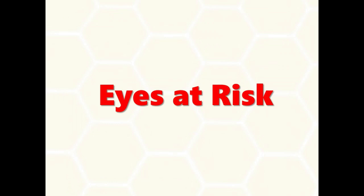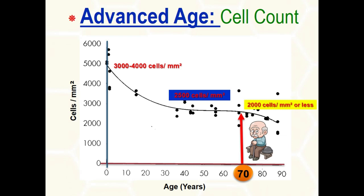We have to recognize the risk factors of endothelial cell loss. Number one: advanced age. The endothelial cell density is rather stable from age 20 through approximately age 50 years. After 70 years, the endothelial cell density decreases significantly in most people.